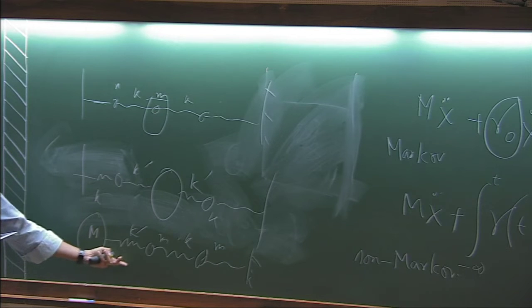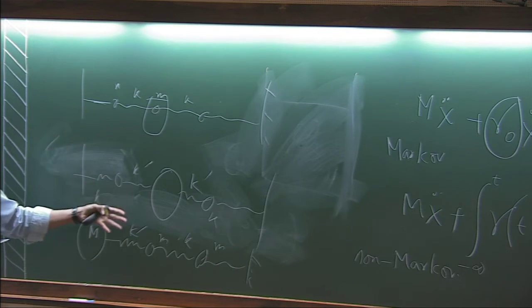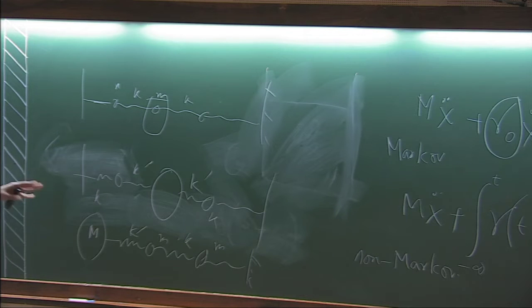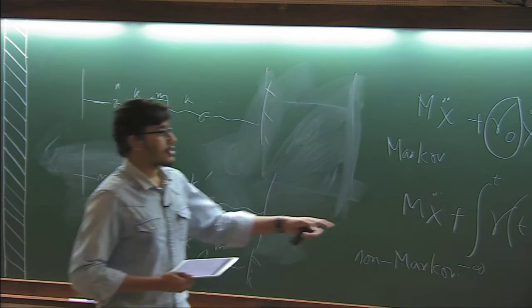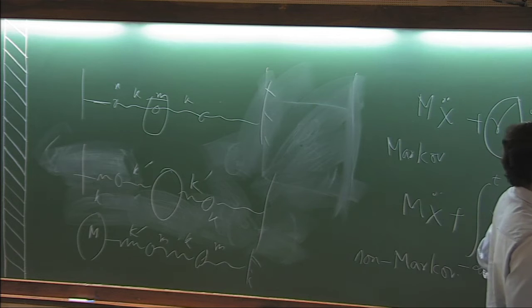And so how to analyze this system? So we can of course write the Hamiltonian, because it's harmonic interaction. And because the bath is harmonic, we can integrate out the bath. So that is very crucial for the harmonic, I mean, because of this harmonic choice, we can integrate out the bath and we can get this equation. All right. This equation with this particular gamma.